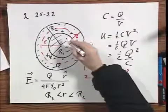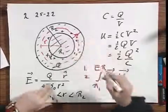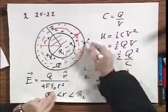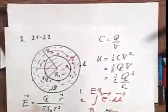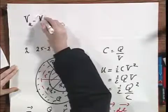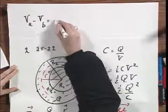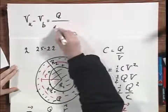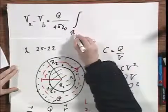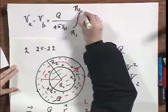Now, we want to do the potential difference. Let me call this point A, and let me call this point B. It doesn't matter how I go from the inner sphere to the outer sphere, so I call it just VA minus VB. That is now Q divided by 4 pi epsilon 0 times the integral from R1 to R2.